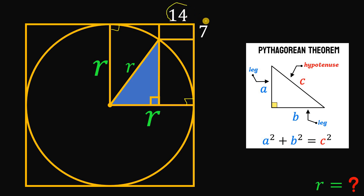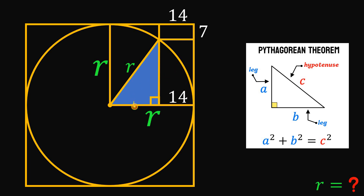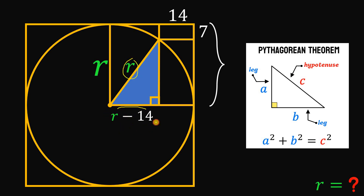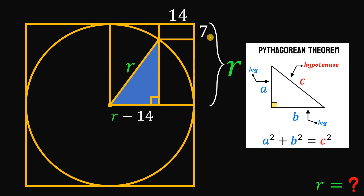Using the side lengths of the rectangle, we can find the side lengths of this right triangle. Since we have a rectangle, opposite sides must be equal, so this side must also equal 14. Therefore, one side of the right triangle equals r minus 14. The whole radius equals r, and since this part is 7 units, this segment must equal r minus 7.